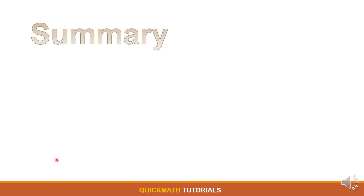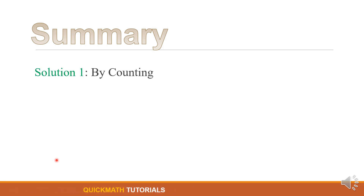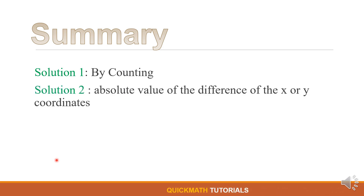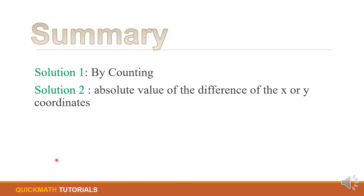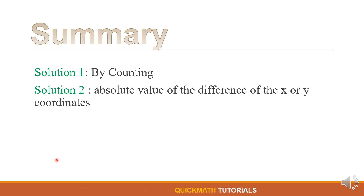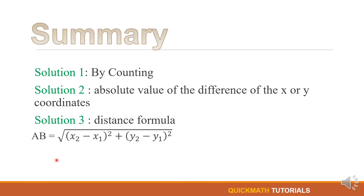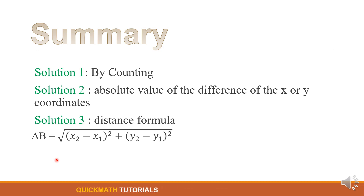To sum it up: solution number 1 is by counting — we can use this method if the given is already graphed. Solution number 2 is the absolute value of the difference of the x-coordinates if the given is a horizontal line, or y-coordinates if the given is a vertical line. Solution number 3 is using the distance formula. Solution numbers 1 and 2 are only applicable if the given line is horizontal or vertical.